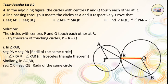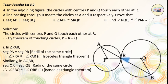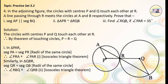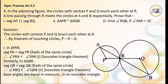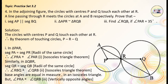Similarly, in triangle QBR, seg QR = seg QB, radii of the same circle. Therefore, angle RBQ is congruent to angle QRB — equation No. 2 — isosceles triangle theorem. Base angles are equal in measure. But angle PRA is congruent to angle QRB — equation No. 3 — vertically opposite angles.